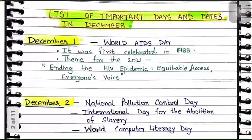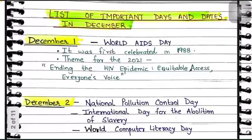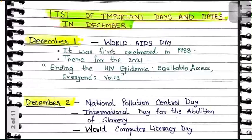So this is your list of important days and dates in December. The word December is derived from the Latin word 'Decem' which means 10. Coming to December 1 — December 1 is World AIDS Day and it was first celebrated in 1988. The theme of 2021 was 'Ending the HIV Epidemic: Equitable Access, Everyone's Voice,' which means to raise awareness and knowledge about HIV and call to move towards ending the HIV epidemic.